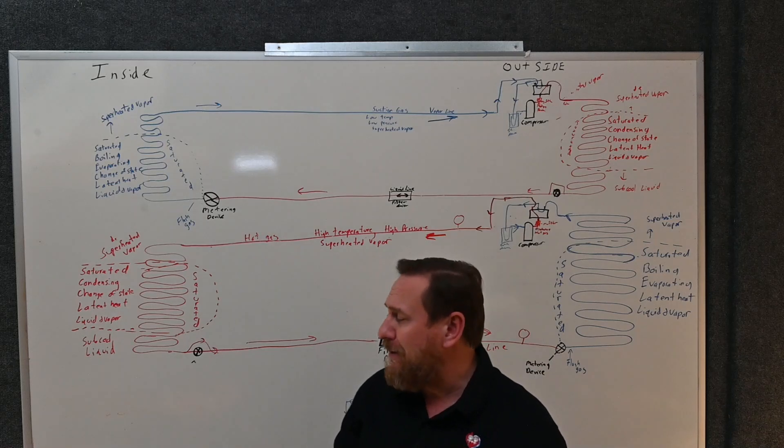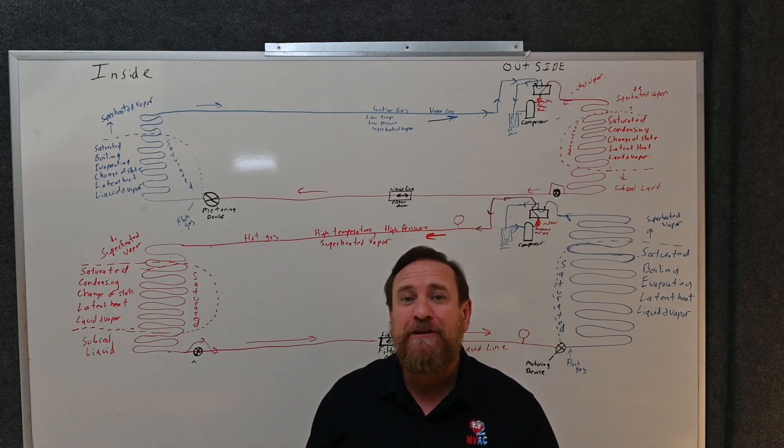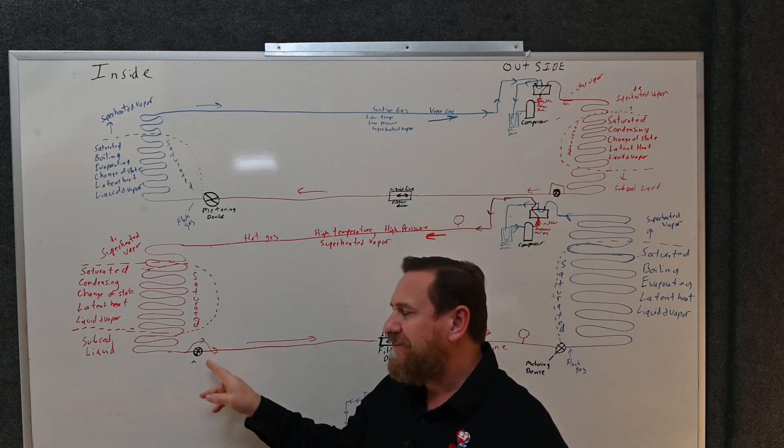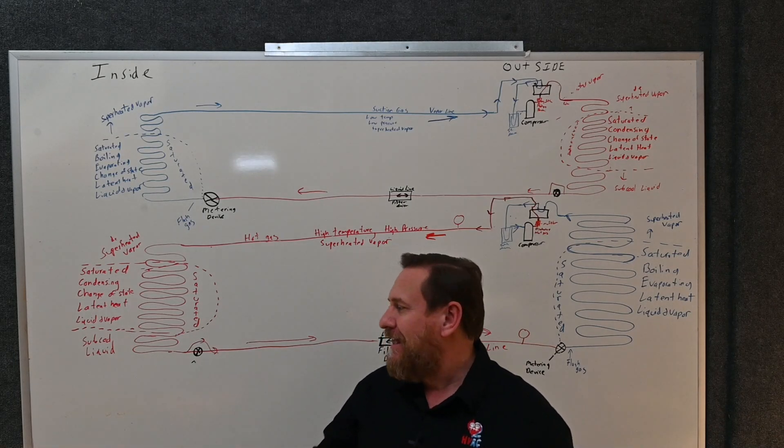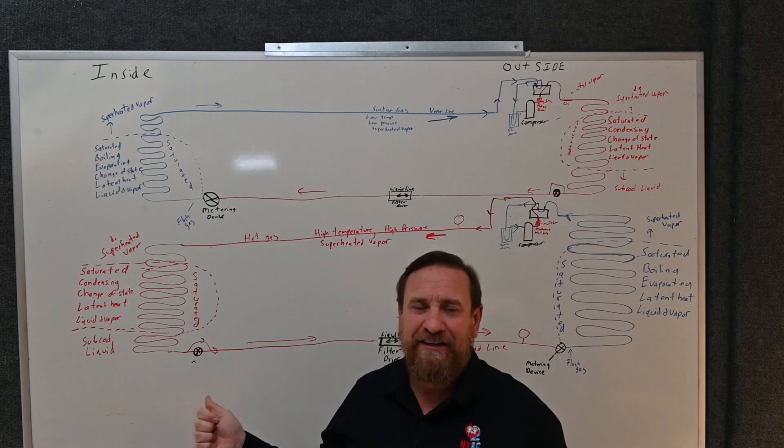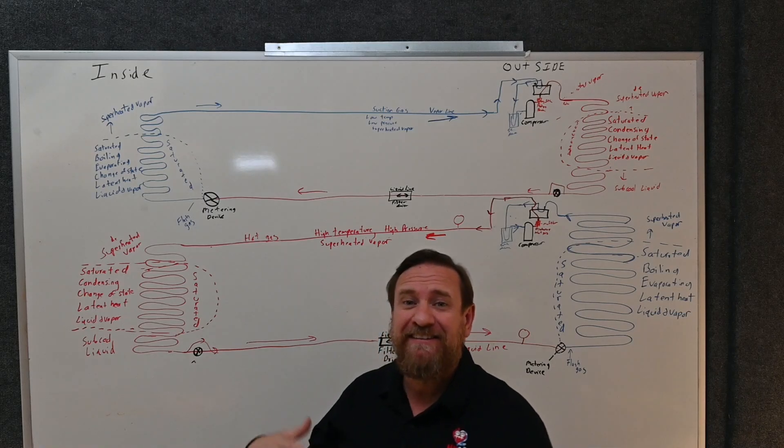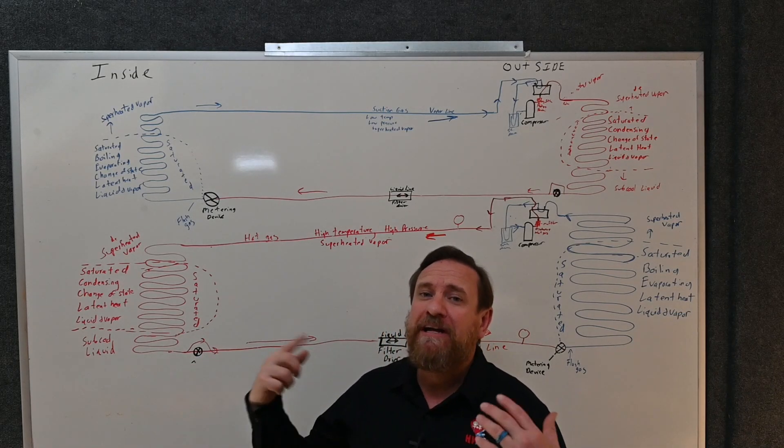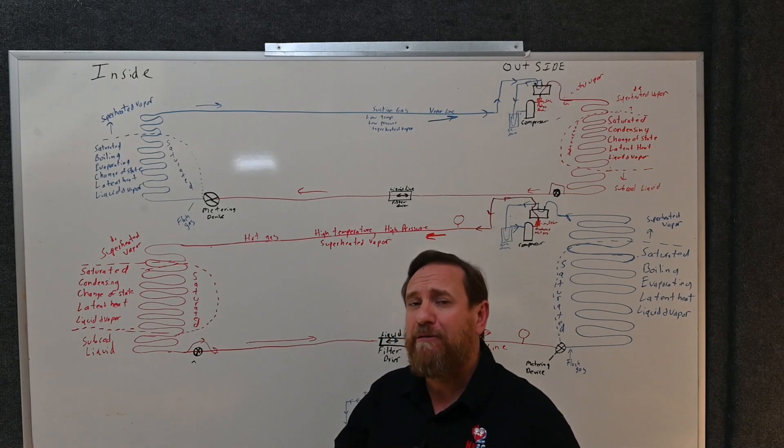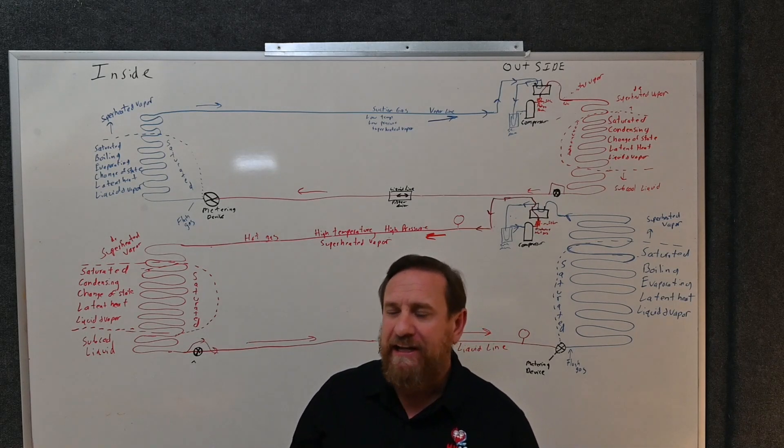I want to note that a lot of people blame that TXV first, but notice in this scenario it wasn't that the TXV failed. It was contamination in that system that clogged up those moving parts in the TXV, so it wasn't its fault. The fact that the system was dirty and contaminated. So we want to keep that in mind. If we have that issue, we want to make sure we clean up that system so we don't have that same problem on the new metering device we're putting in there.